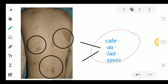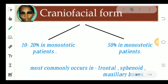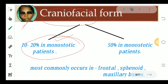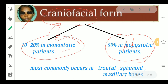Moving ahead, these café-au-lait spots are the pigmented patches which can be seen on the patient's body. Coming to the craniofacial form of fibrous dysplasia — as the name suggests, it involves the face as well as the cranium. There would be facial asymmetry. 10–20% of patients with the monostotic form and 50% with the polystotic form will have craniofacial features. Most commonly it involves the frontal bone, sphenoid bone, and maxillary bone.